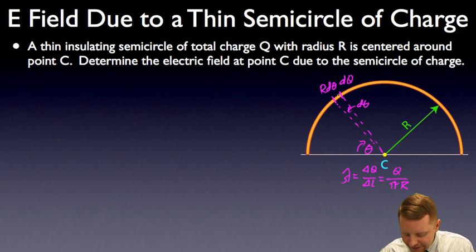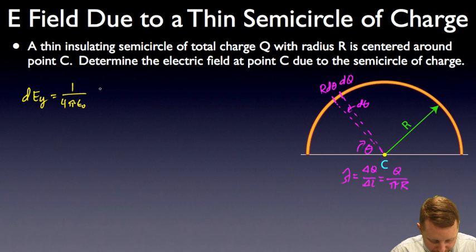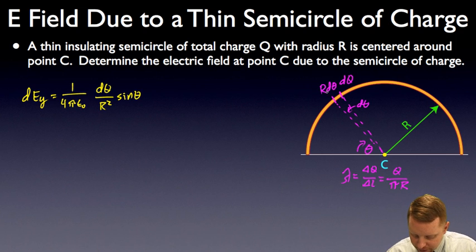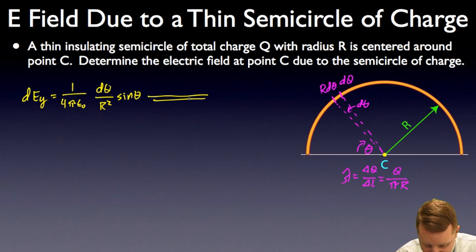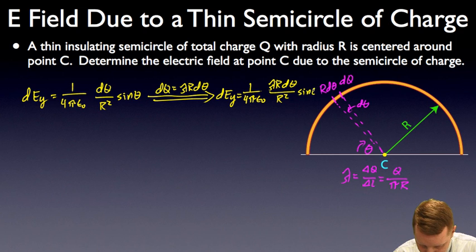Let's figure out the electric field due to just this little bit of charge — that little bit of the semicircle. The differential of the y component of the electric field is going to be 1 over 4πε₀, times our charge dq over our distance squared, R squared. And since we're just looking for the y component, that'll be times the sine of theta. Now that dq — the little charge in here must be the linear charge density times the length of that element. So since dq equals λR dθ, the differential of Ey equals 1 over 4πε₀ times λR dθ over R² times sine theta.